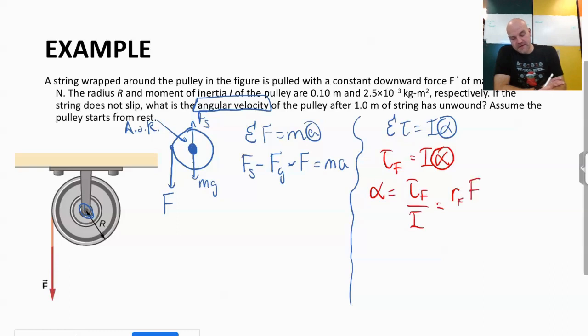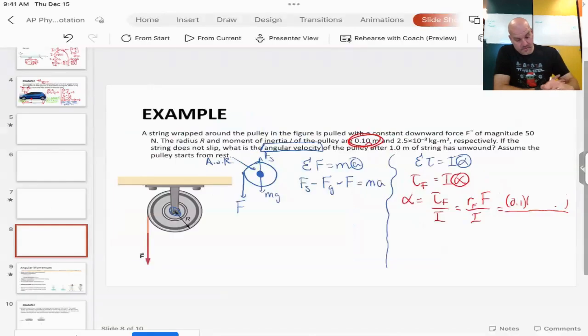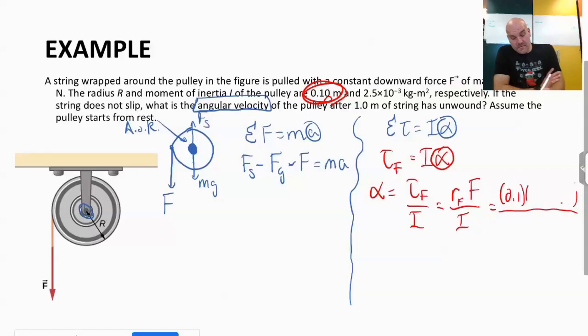So I know this is going to be RF times F over I. And you do have to be careful that sometimes they'll give you that in centimeters, but this is in meters. So I'm going to do 0.1 times 2.5 times 10 to the negative 3 divided by, oh sorry, my F is not 2.1 times the negative 3. My force is 50.